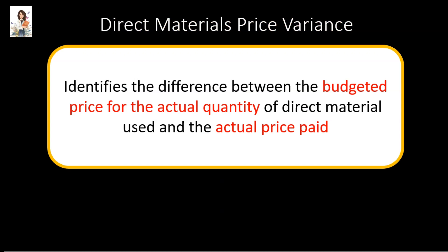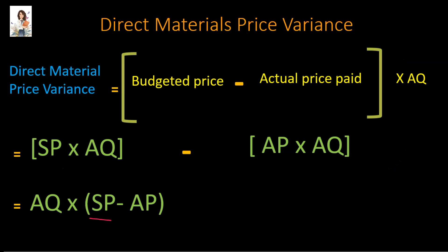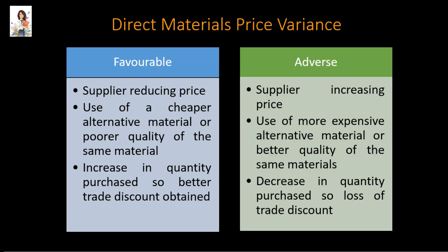Now we look at the direct materials price variance. This variance identifies the difference between the budgeted price and the actual price for the actual quantity of direct materials used. The formula is: standard price minus actual price of the direct materials, the whole multiplied by actual quantity of direct materials used. If the direct materials price variance is favorable, maybe the supplier reduced the price, you are using a cheaper alternative material, or you are using poorer quality of the same material. An adverse direct materials price variance could mean the supplier has increased the price, you are using more expensive alternative material, better quality of the same material, or you have reduced the quantity purchased so you are unable to avail of bulk discount.